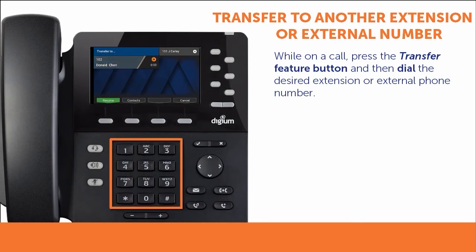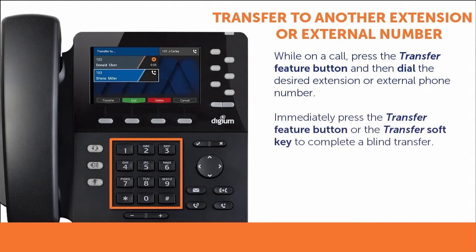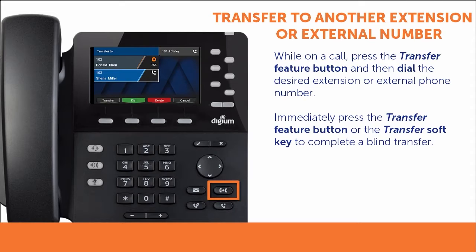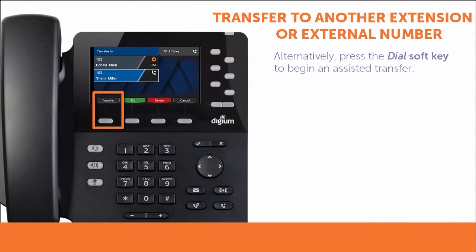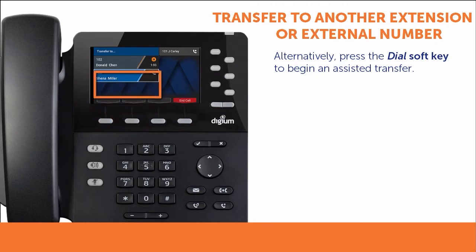Then, dial the extension or phone number of the person to whom you wish to transfer the call. To complete a blind transfer, press the transfer feature button or transfer soft key. Or to begin an assisted transfer, press the dial soft key, which starts a new call to your preferred contact.